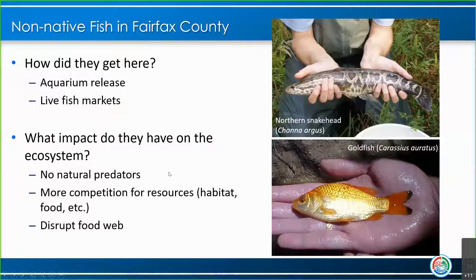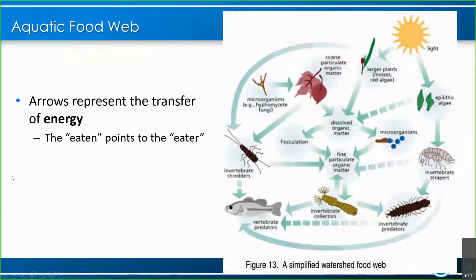What impact do invasive species have on the ecosystem? As John mentioned in his presentation, they usually don't have any natural predators, so there's no pressure to keep their population in check. This leads to more competition with native species for resources such as habitat and food, and it can overall just disrupt the food web. When you're looking at a food web, remember that the arrows represent the transfer of energy — not who is eating whom — and everything is balanced. When an invasive or non-native species comes in, it can throw off the whole system if there's no good native predator, or if it takes too much of the food source for a native species.